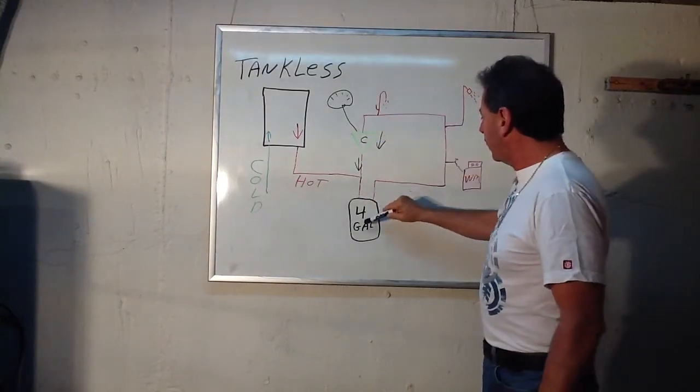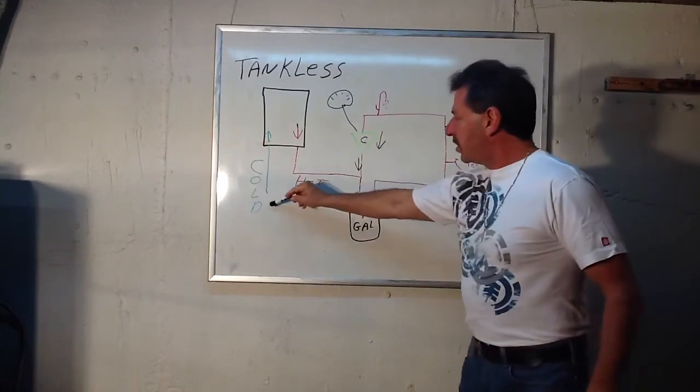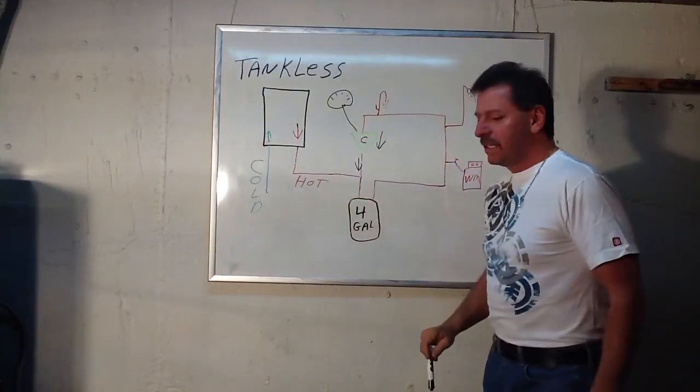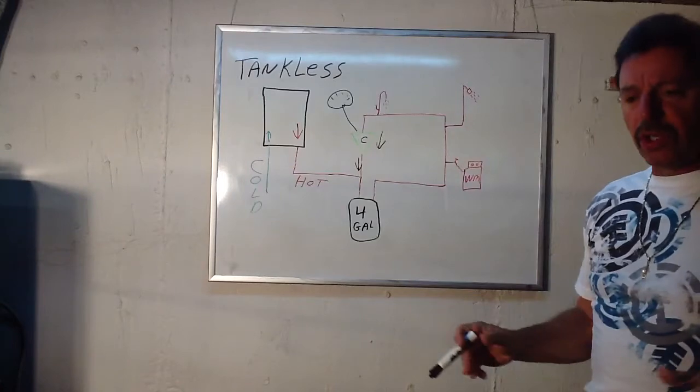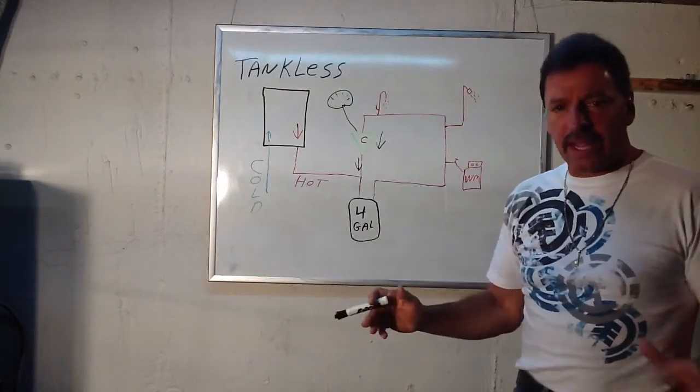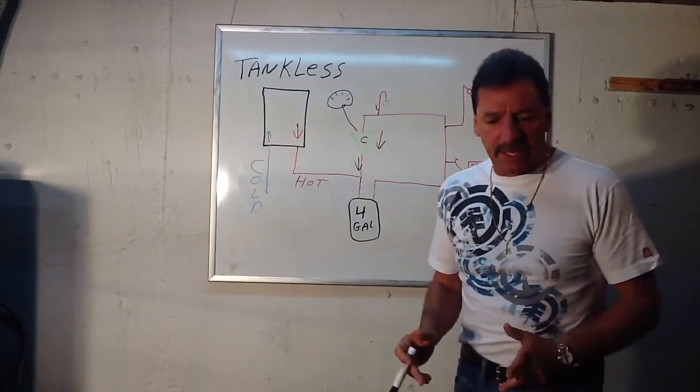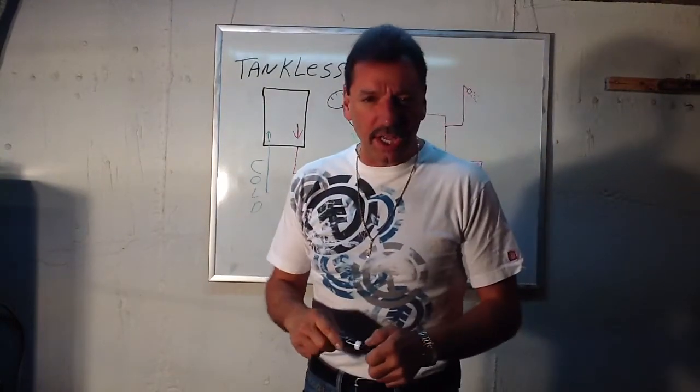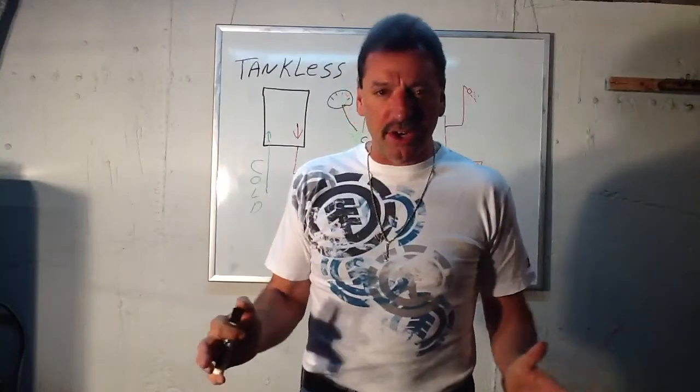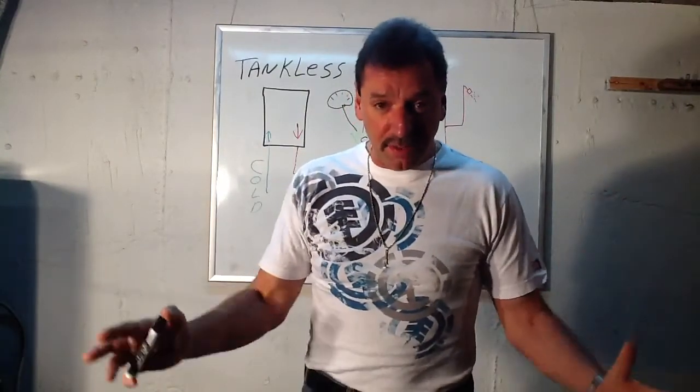Basically that's the system: the hot going out into the tank and circulating through the tank and around the house and back. This is the cold in, the hot out of the tankless. That'll help you if you want to do what's called a small storage tank with the tankless hot water heater. I hope this helps you in your decision if you decide to go tankless or not and what you're really in for.